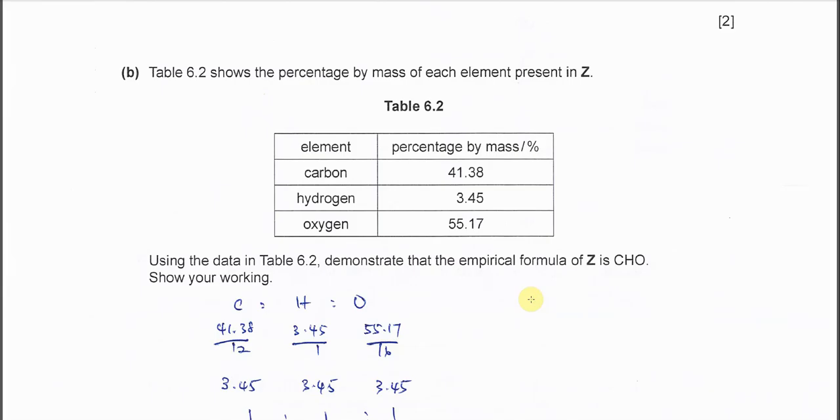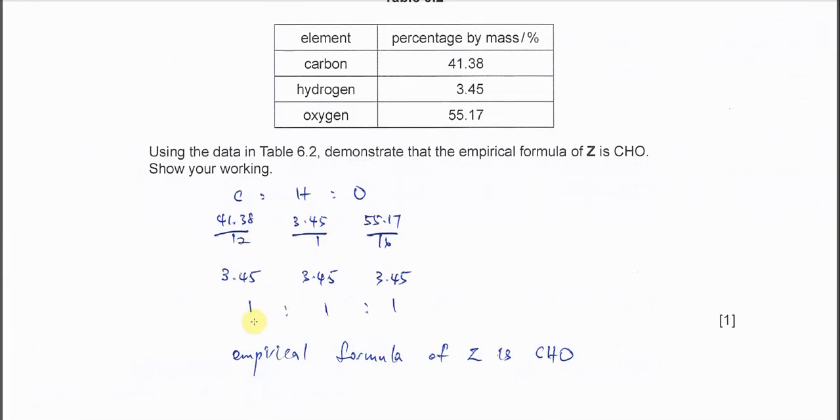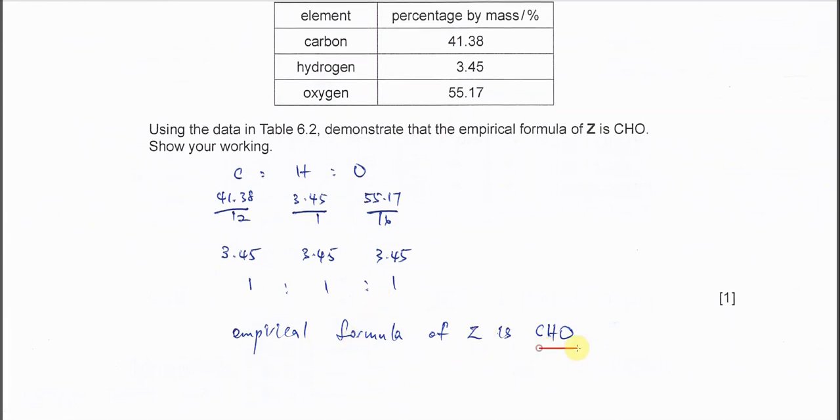For part B, just find the mole percentage over the mass of the elements. You get the mole ratio, you should get all 1 to 1 ratio. So the empirical formula is CHO.